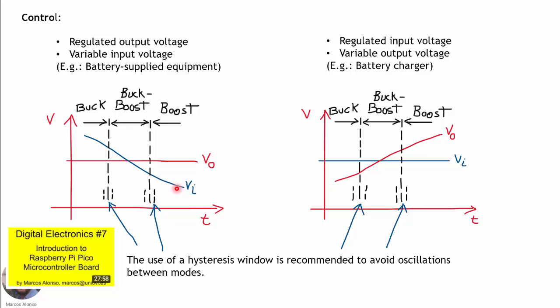To switch from one mode to another, we detect the voltage level thresholds and it is important to use a hysteresis window to avoid oscillations between modes. Without a hysteresis band, switching back and forth between modes generates distortion and malfunction. We can see an example of this application in a video about the Raspberry Pi Pico microcontroller board, which uses this converter to supply the microcontroller from a small battery.